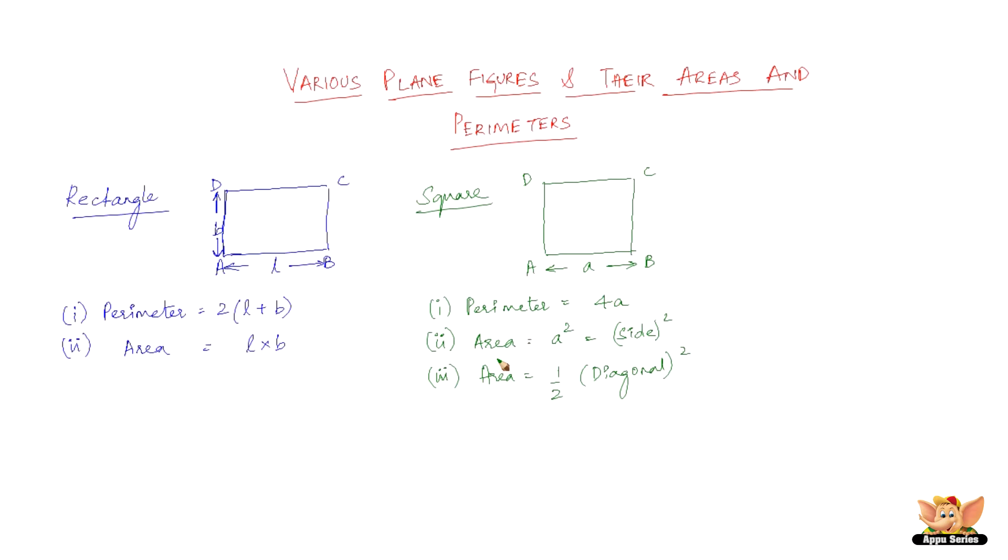Let us go to the area. Area would be a² because all four sides are equal. Multiplication of the two edges would be a and a, which is a×a = a² or side squared.